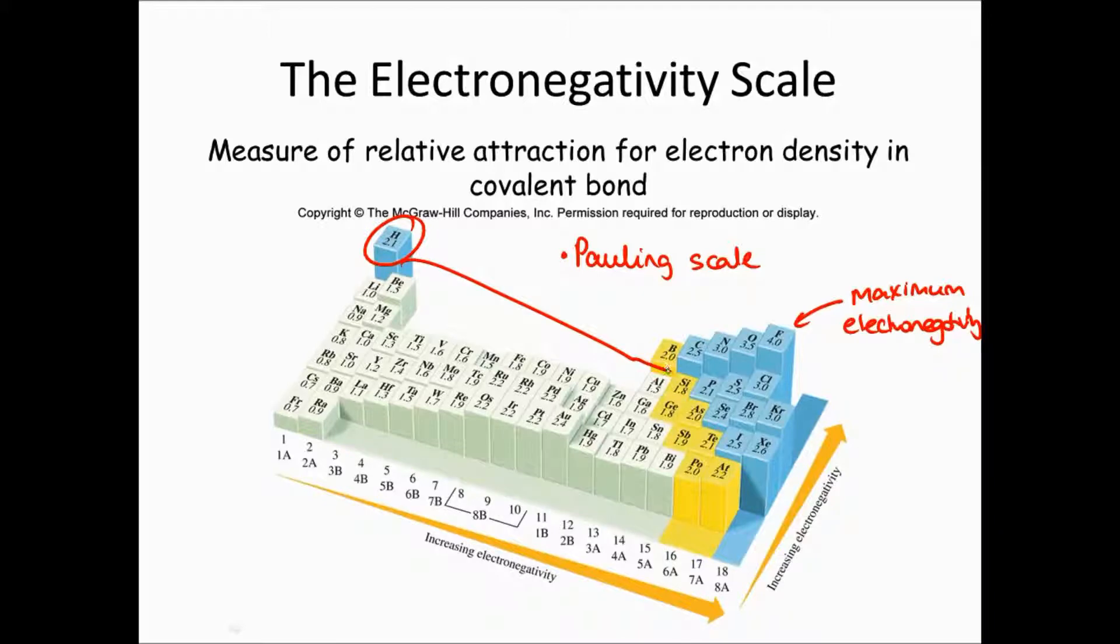Hydrogen fits in somewhere between the metal, non-metal boundary. And you will just have to see how far apart they are to see whether they're polar or non-polar. You should be aware that F is the most electronegative, and then Cl, N, and O are more electronegative than most other things.